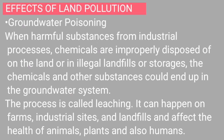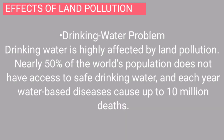Groundwater poisoning occurs when harmful substances from industrial processes and chemicals are improperly disposed of on land, or through illegal landfills, improper storage, or improper agricultural techniques. Those chemicals can end up in the groundwater system through a process called leaching. This can happen on farms, industrial sites, and landfills, and it affects the health of animals, plants, and humans. Drinking water is highly affected by land pollution. As underground water systems get polluted, we will face a scarcity of drinking water. Nearly 50% of the world's population does not have access to safe drinking water, and according to WHO reports, water-based diseases cause up to 10 million deaths every year.